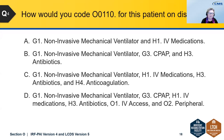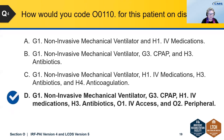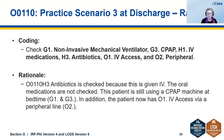Most of you — 75% — answered D, which is the correct answer. O0110 H3 antibiotics is checked because it is given IV. The oral medications are not checked. The patient is still using the CPAP machine at bedtime, so you would check G1 and G3 for the CPAP. In addition, the patient is returning home with a peripheral line, so you would also check O1 and O2 peripheral.